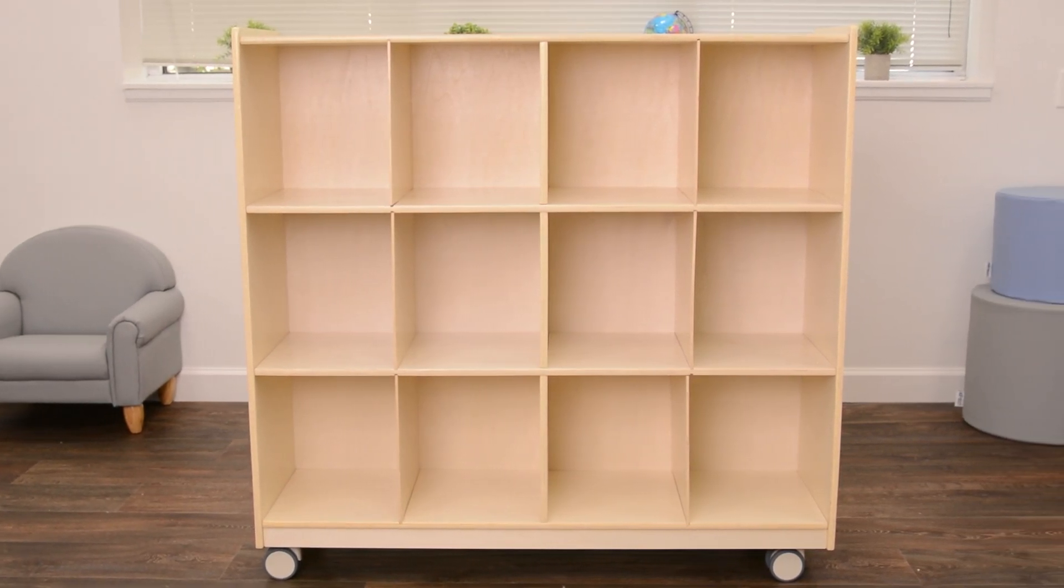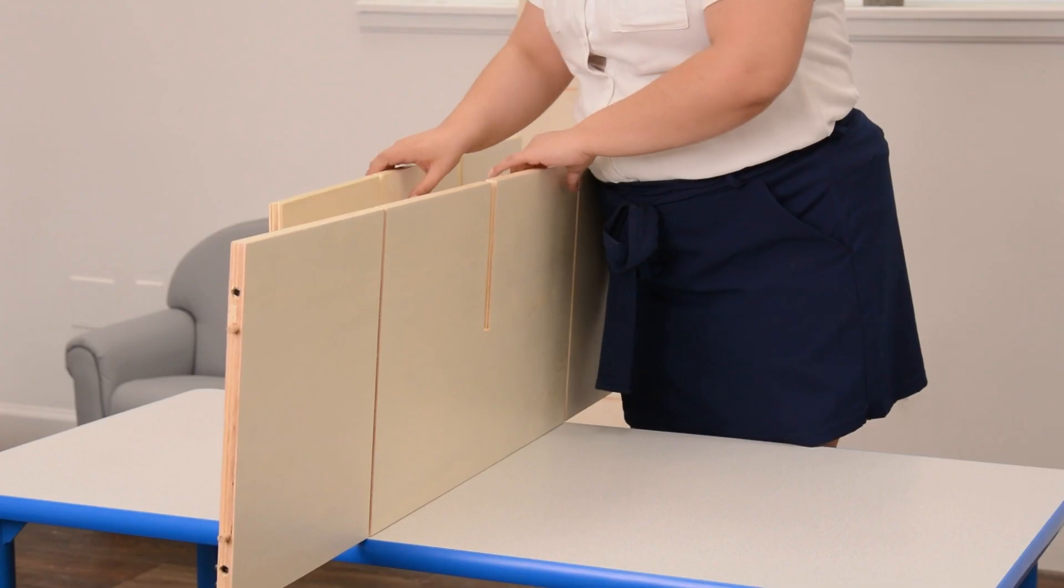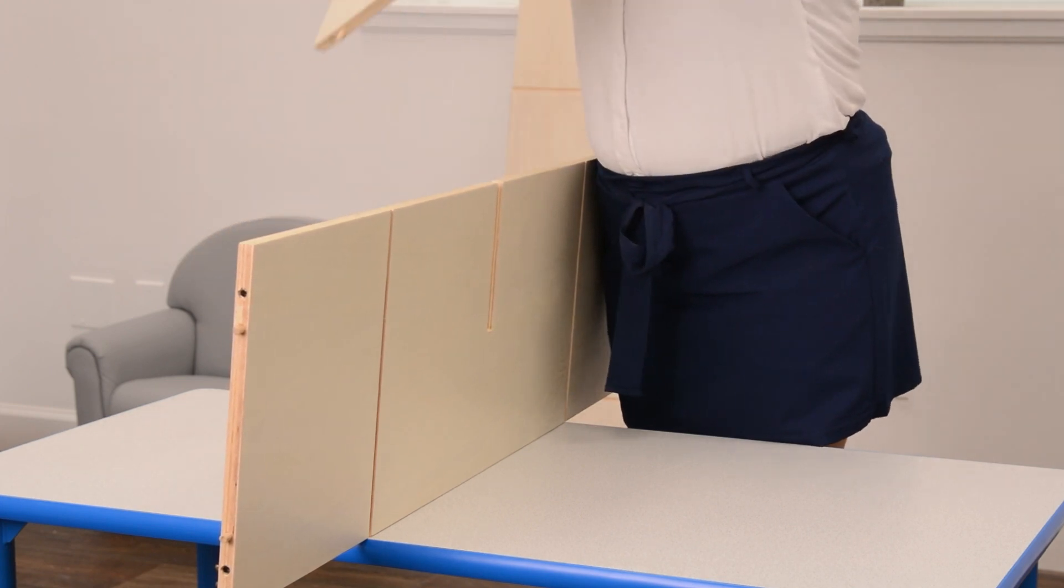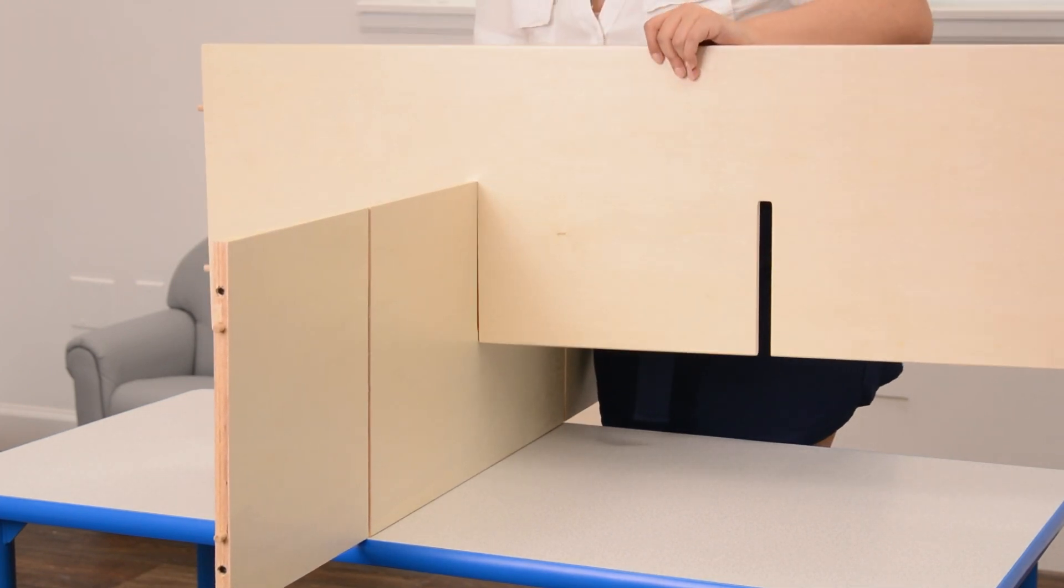Welcome to our assembly video. I'm going to show you how to put together this mobile 12 section cubby storage. Begin by interlocking parts 5 and 6.